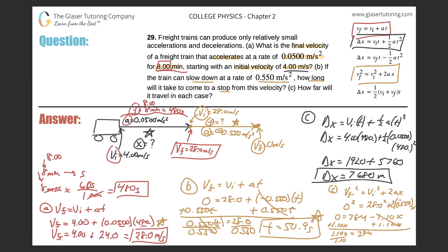Finally divide out the 1.10. X equals 784 divided by 1.1, which comes out to about 713 meters. So X in the gold part will be 713 meters, and the X part in black was 7,680 meters.